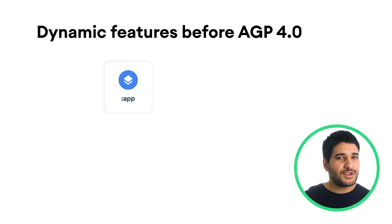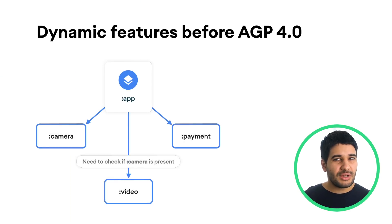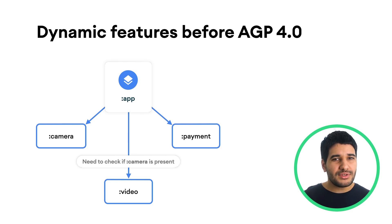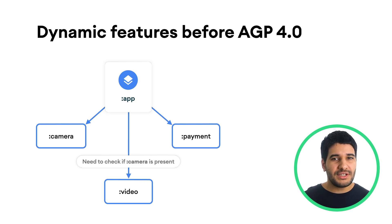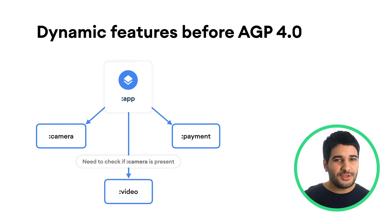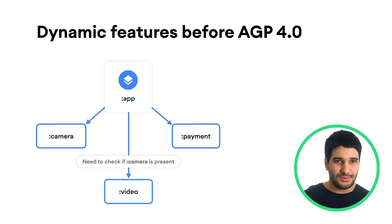In previous versions of the Android Gradle plugin, all dynamic feature modules could depend only on the app's base module. When using Android Gradle plugin 4.0, you can now include a feature module that depends on another feature module.